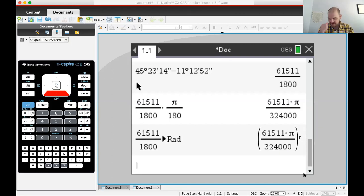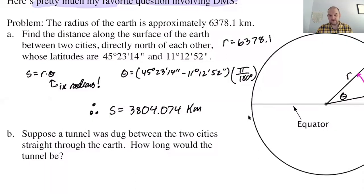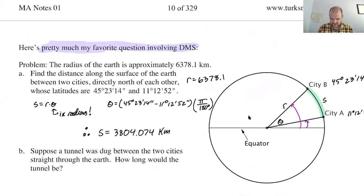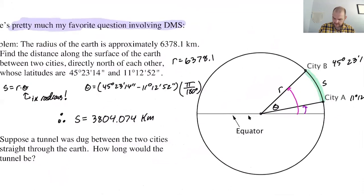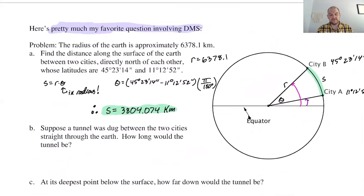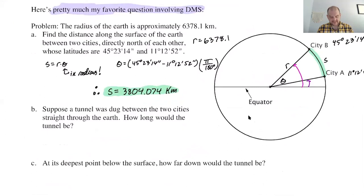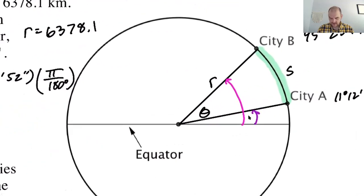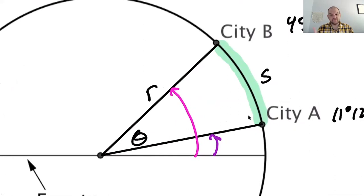So we've already found S — this is our distance along the surface of the Earth. S is the distance between these cities along the surface, so that's if you walked. Now, the next question is weirder: what if you were able to dig a tunnel between the cities? How long would that be? This uses stuff we haven't expressly talked about yet this year, but it's review.